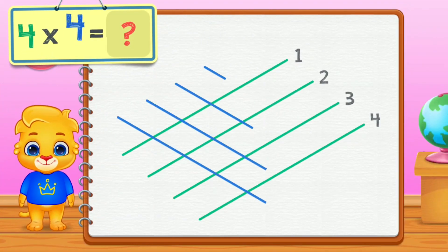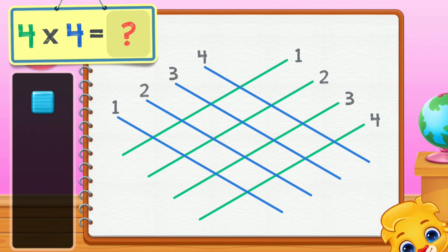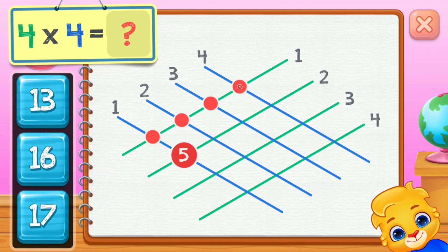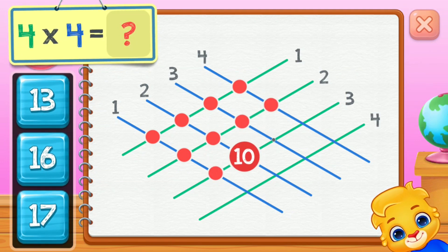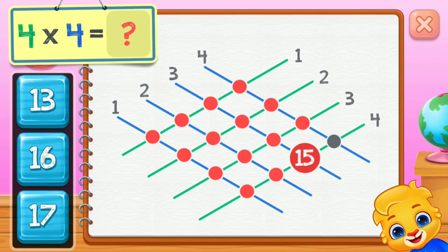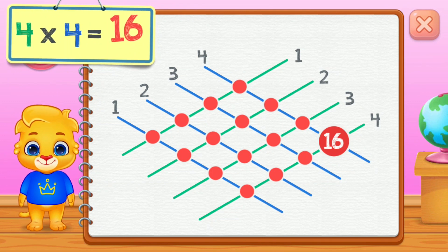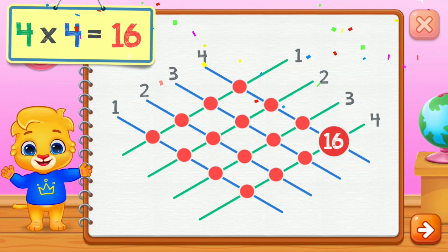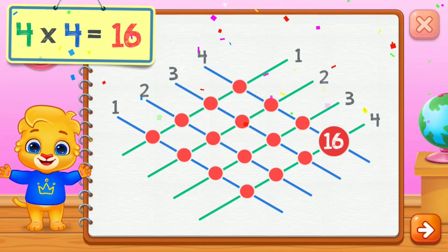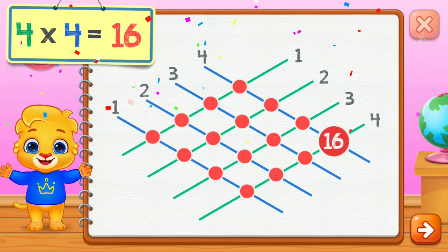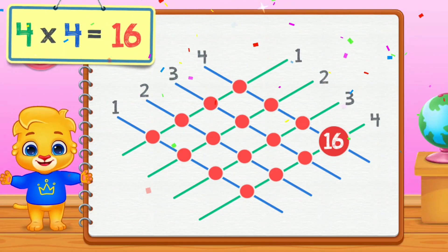Four times four equals... one, two, three, four, five, six, seven, eight, nine, ten, eleven, twelve, thirteen, fourteen, fifteen, sixteen. Four times four equals sixteen. Four times four equals sixteen.